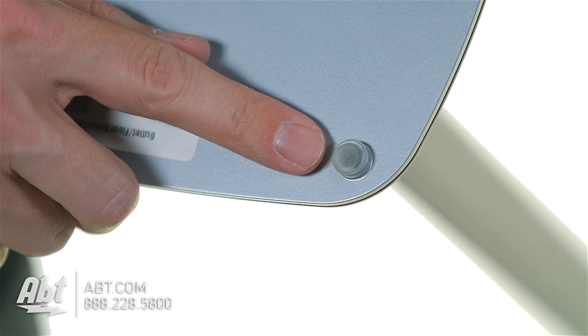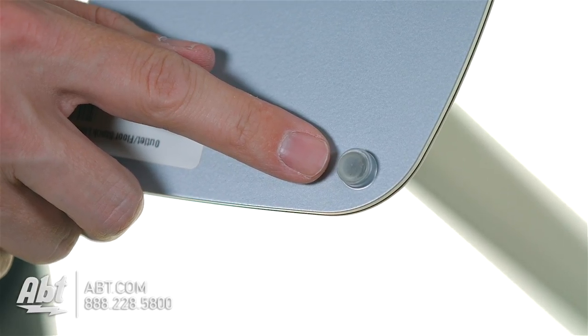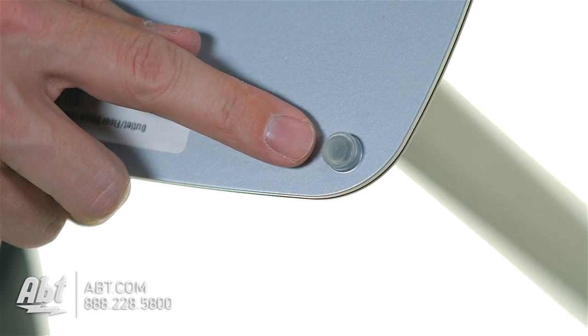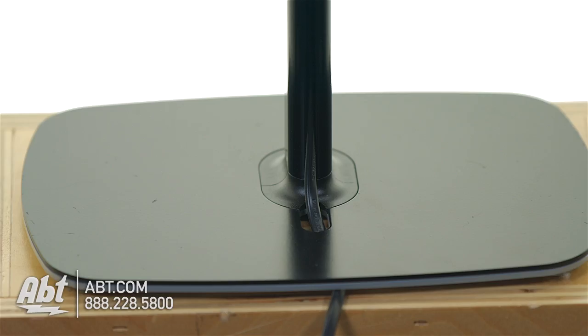Comes with either carpet spikes or little gel pads that you can put on the bottom if you're putting it on a flat floor so the speaker stand doesn't move around. And it's got a great little power cord track on the back here so it's going to hide the power cord really well.